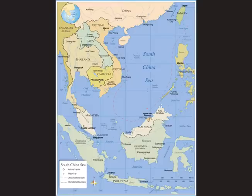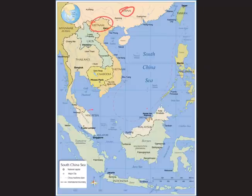Let us start the discussion with map reading first. The South China Sea is located to the south of China. The important countries surrounding this sea, starting from China itself, are: China, Vietnam, Malaysia, Indonesia, Philippines, and Taiwan — these are the six countries involved in the region.